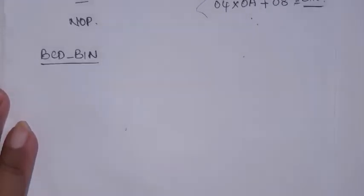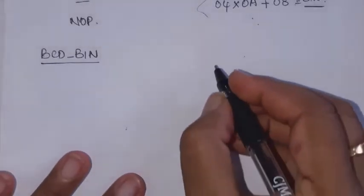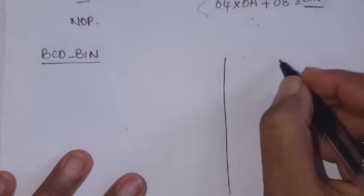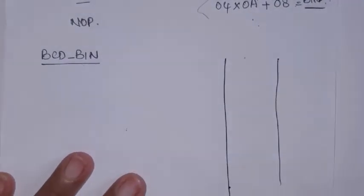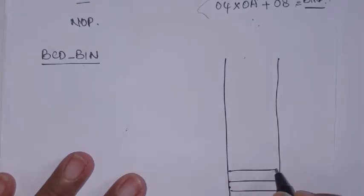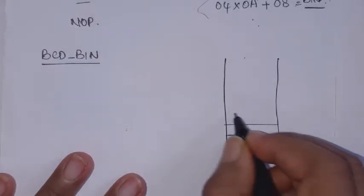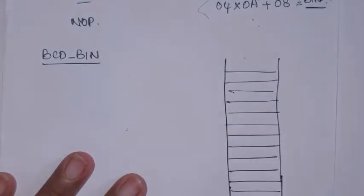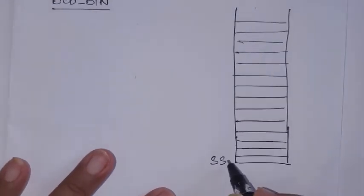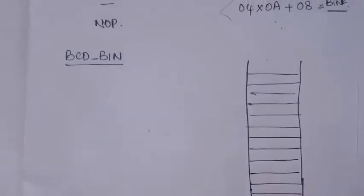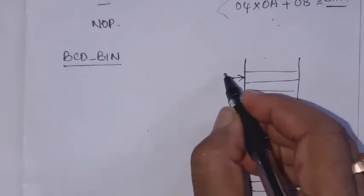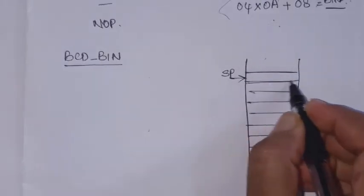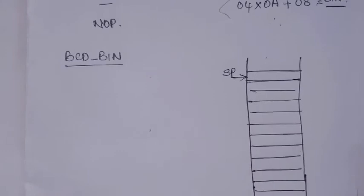So as best practice, whenever you write a subprogram, whatever registers you are using in it, save those register contents temporarily in the stack. The stack memory is first-in, last-out temporary storage. The stack base is the stack segment starting address. The stack pointer currently points to the top of the stack.